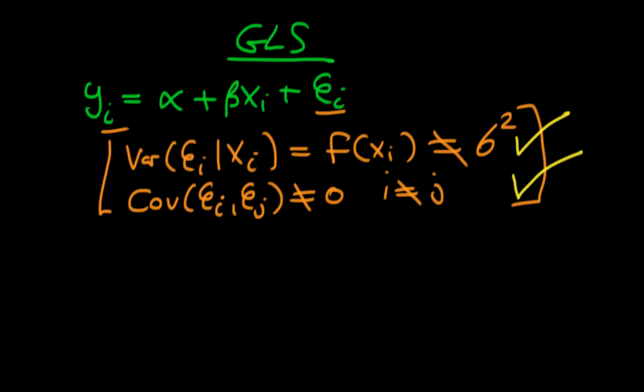Technically, if you know both of these functional forms, generalized least squares is a way of taking this extra information into account when deriving our estimates for alpha and beta. It is a better way of doing things than ordinary least squares because this method turns out to be more efficient.